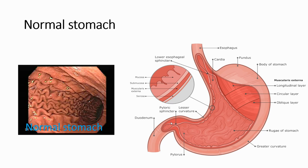The stomach is the part of the GI tract that connects with the esophagus. In the upper portion of the stomach we have the cardia, then the fundus, and after the fundus we call the body of the stomach. The body has two curvatures: the lesser curvature and the larger one called the greater curvature.